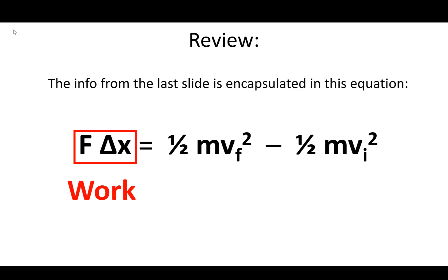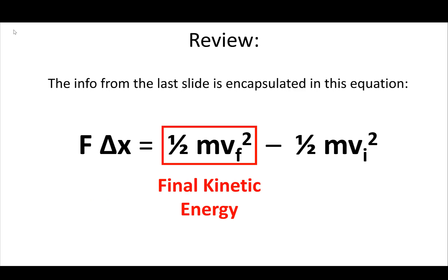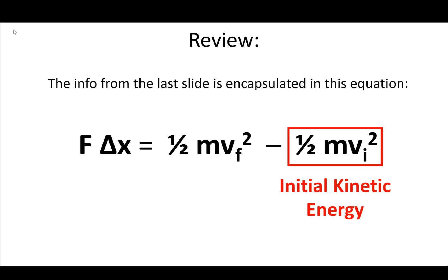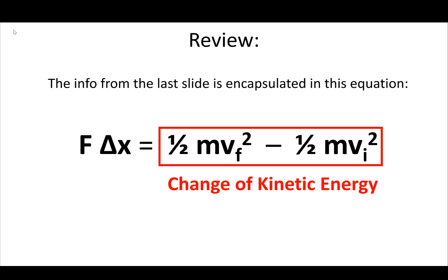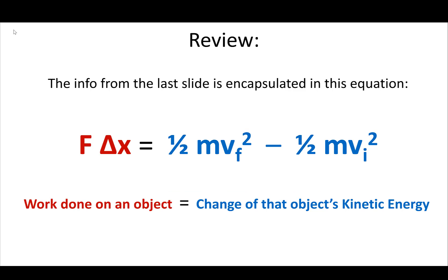The work-energy theorem says that the work you do on an object is equal to its final kinetic energy minus its initial kinetic energy — that is, the change of kinetic energy. So the work done on an object equals the change of that object's kinetic energy. These words only exist as a summary for this real mathematical relationship.